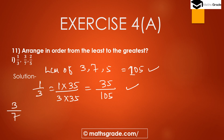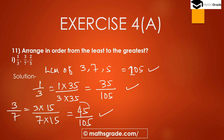Now convert 3/7 into an equivalent rational number. We need the number to multiply with denominator 7 to get 105. 7 multiplied by 15 is 105. So we multiply numerator 3 by 15: 3 × 15 = 45. Therefore 45/105 is the equivalent rational number of 3/7.